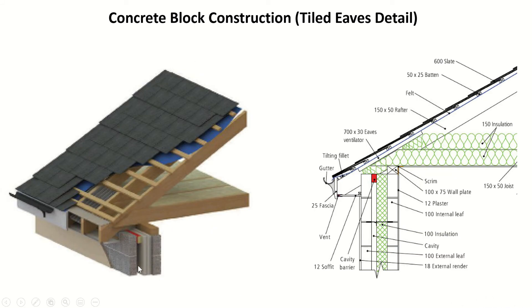This is a 3D example of what we're going to do. The only difference is this is a slate detail, not a tile one, but all the members of the roof are the same. We have our joists, rafters, felt, two block layers, insulation, cavity closer, fascia and soffit.